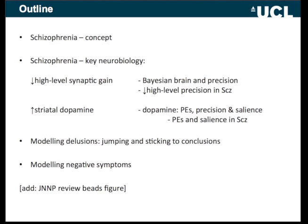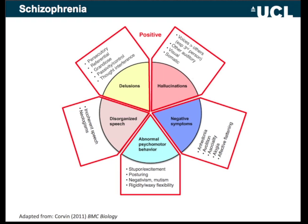Just as a very brief intro for people who might not be familiar with the concept of schizophrenia: schizophrenia is essentially a quite heterogeneous syndrome. For the diagnosis, you need just two of any of these symptoms, which are divided up into different categories. The commonest symptoms — the so-called positive symptoms at the top — are delusions and hallucinations.